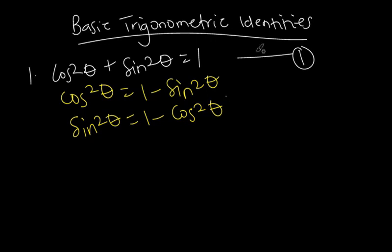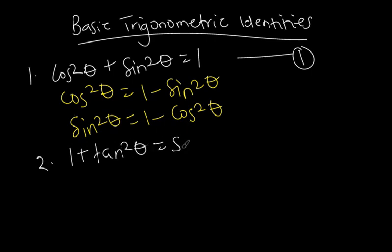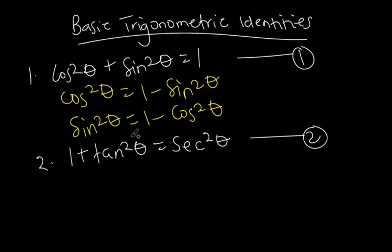The second identity we want to look at is one plus tan squared theta is equal to sec squared theta. This identity is also very important — we normally use it when we want to prove certain cases. For example, if you come across tan squared theta and don't know what to do, you can make tan squared theta the subject, which gives sec squared theta minus one, and substitute that in place of tan squared theta.